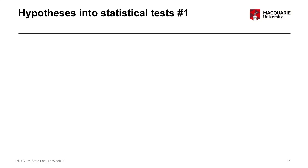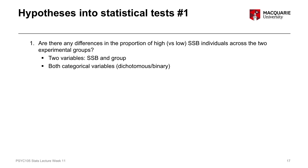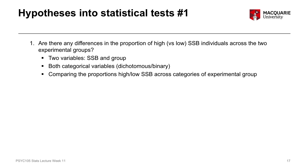To understand how we translate from the wording of those questions into actual statistical tests, let's break down each of these questions. Our first question is whether there's any difference in the proportion of high versus low somatic symptom burden individuals across our two experimental groups — the mindfulness group and the mind-wandering control group. Both variables, somatic symptom burden and experimental group, are categorical variables with two categories each. Because we're comparing proportions across two categorical variables, the test we want is a chi-square test of independence.